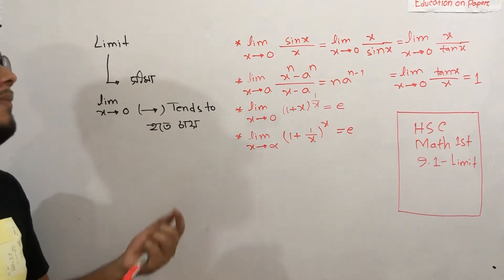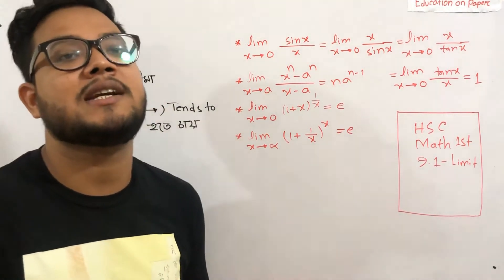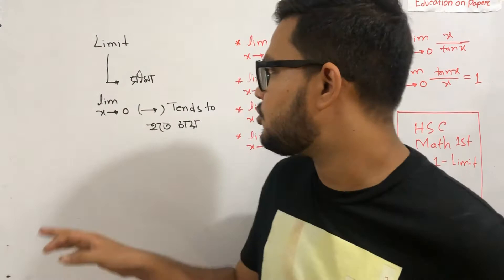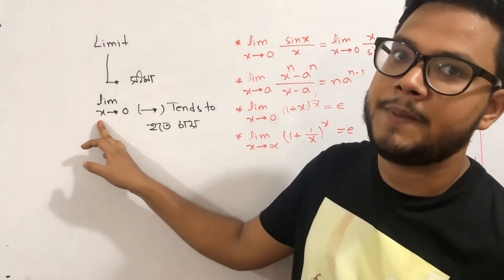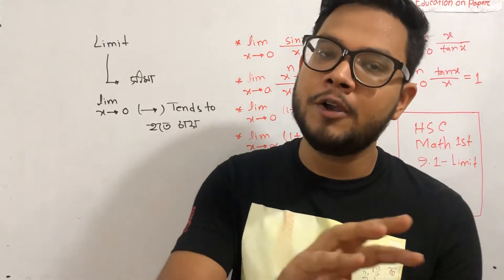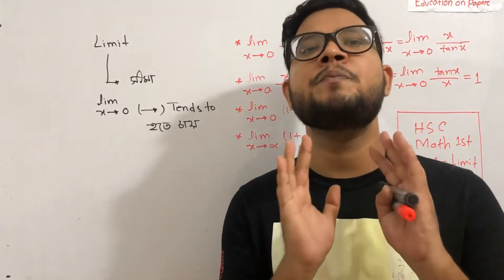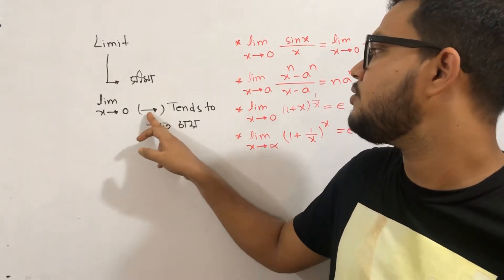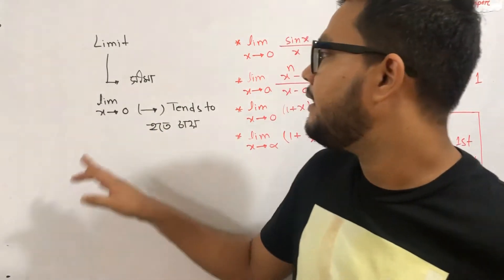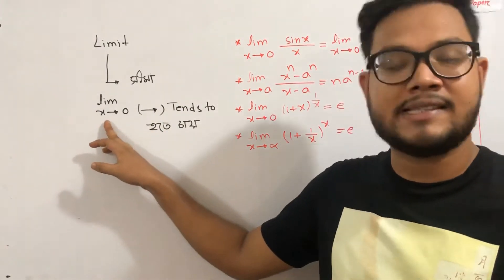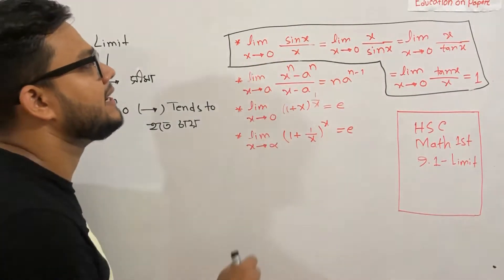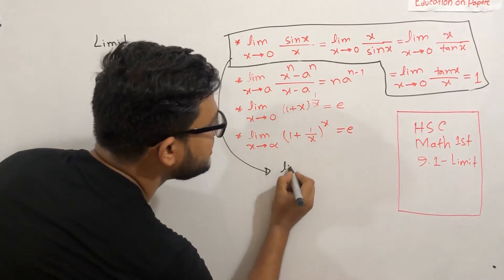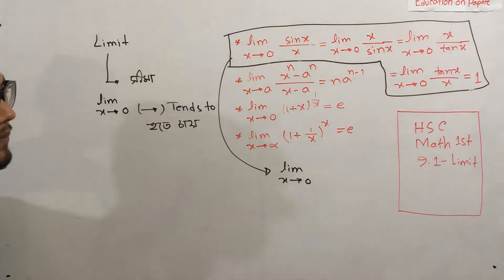This is x tends to 0. x tends to 0 means 0 is 0. The limit is x tends to 0 is 0. As you know, the limit is 0. Now we have to make a difference. x tends to 0 means 0 is equal. One thing is that sin x is equal to x.